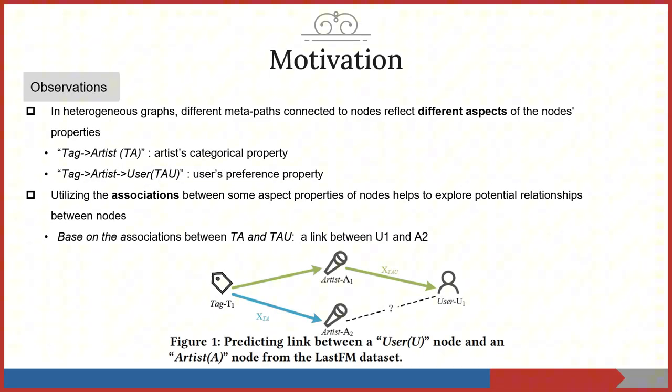Let's begin with our motivations. First, in the link prediction task, we have two observations. In heterogeneous graphs, different metapathes connected to nodes reflect different aspects of nodes.